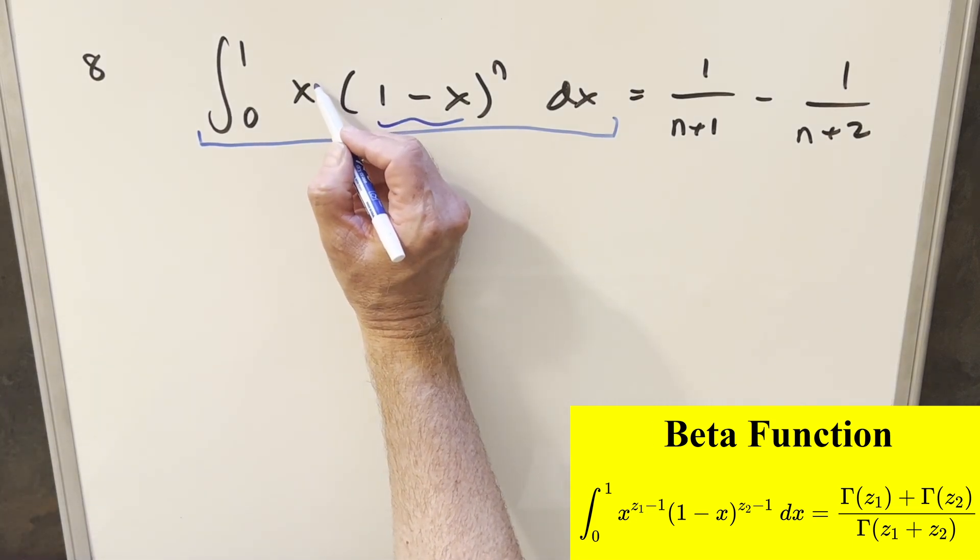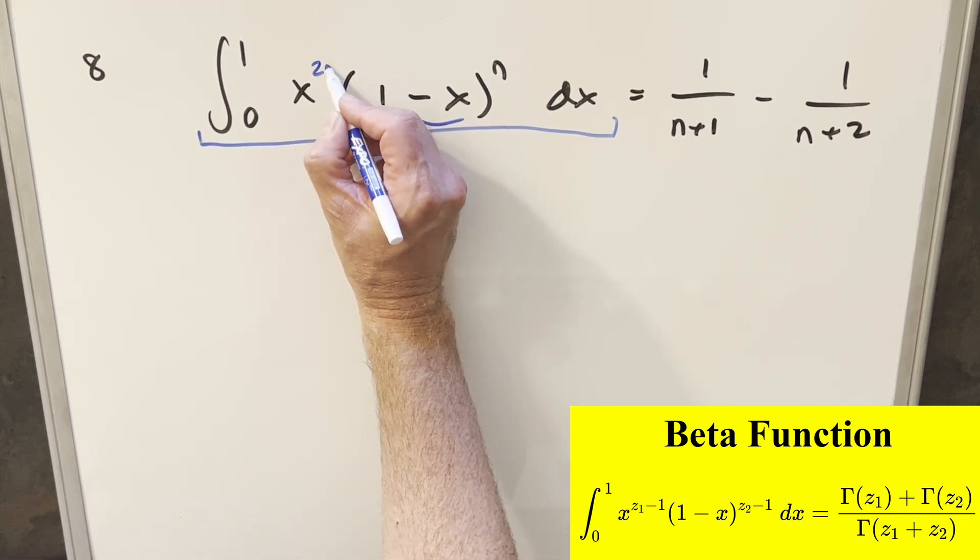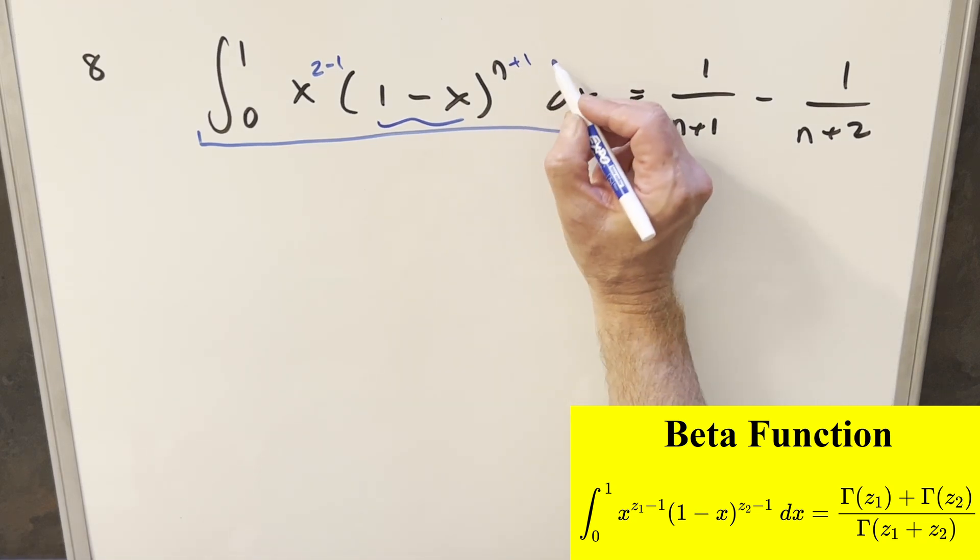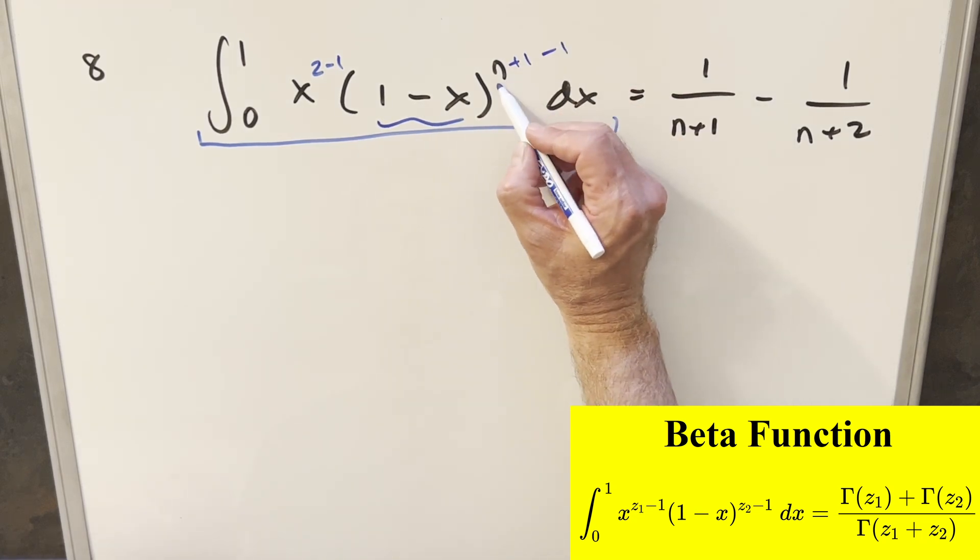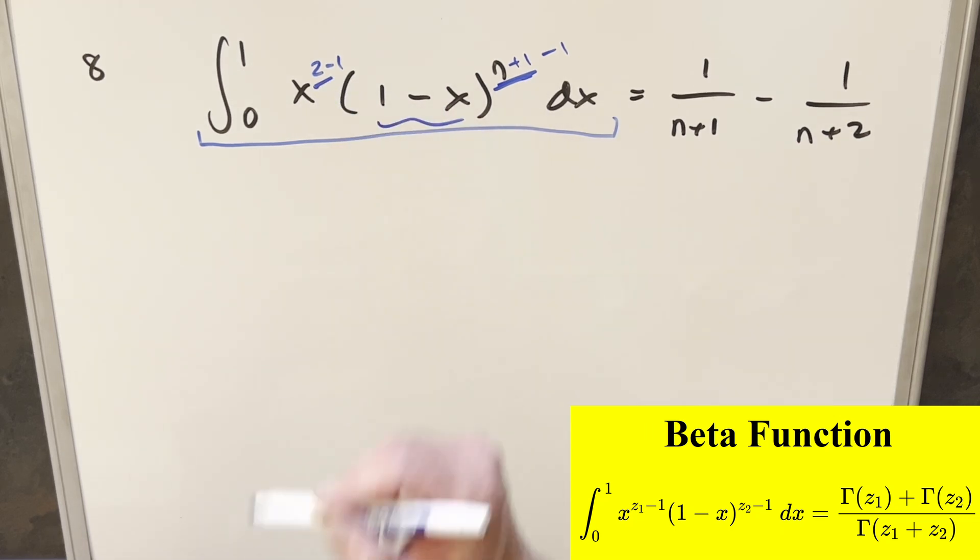So like on the exponent here on x, that's going to be a 1. Well, what I can do instead is write this as 2 minus 1. And then here on the n, we can write this as n plus 1 minus 1. Just because the beta function, this is going to be our input. We're going to need that n plus 1 value in this 2.